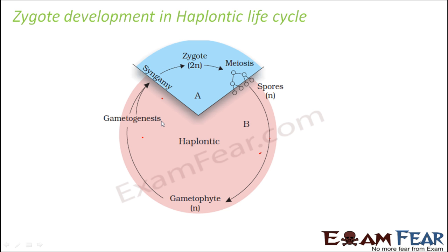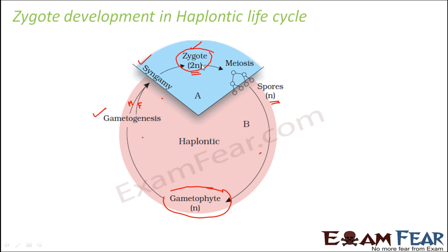In organisms with haplonic life cycles, the zygote divides by meiosis. Gametogenesis takes place — male and female gametes are formed, they fuse together in syngamy (fertilization), and the diploid zygote is formed. This diploid zygote then undergoes meiosis and forms haploid spores — so 2n changes to n. These haploid spores gradually grow into haploid individuals.